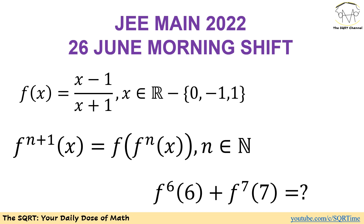Based on that we are going to have f₆(6) plus f₇(7). Remember f_{n+1}(x) is defined as f(fₙ(x)), where n is a natural number. Before moving forward to talk about the solution, make sure that you pause the video to think about this problem, and we will see you in about 15 seconds.